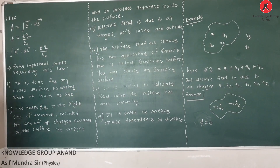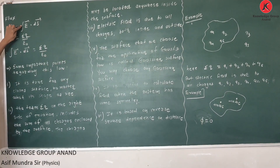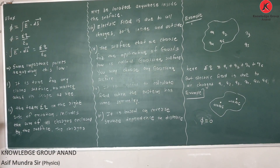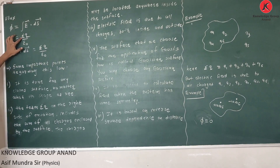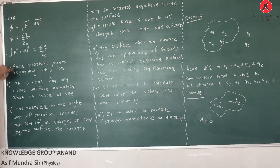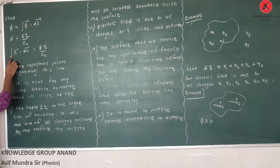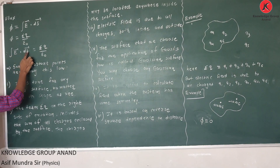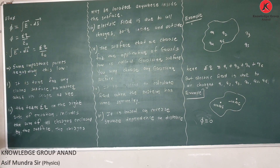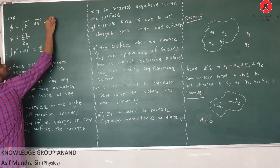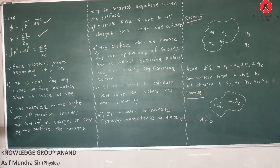The flux is equal to ∮E·dS. We know that φ = ΣQ/ε₀, where ΣQ is the total charge enclosed by the closed surface. Combining these, the mathematical form of Gauss's Law is: ∮E·dS = ΣQ/ε₀.